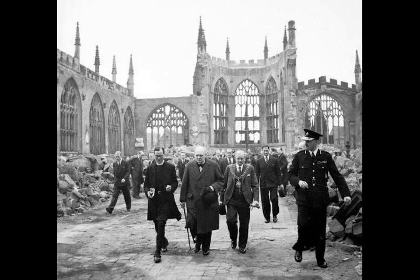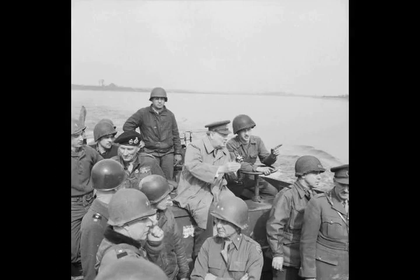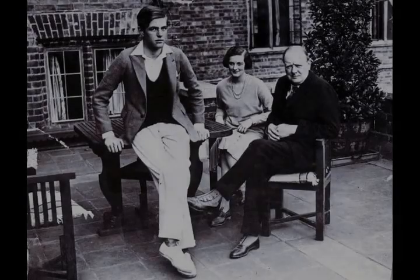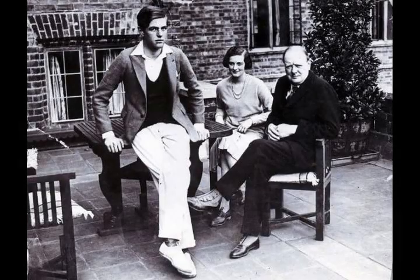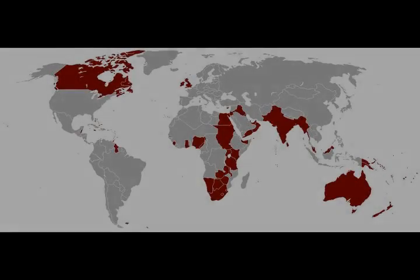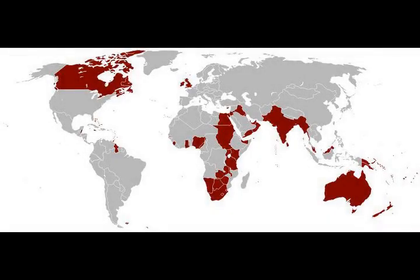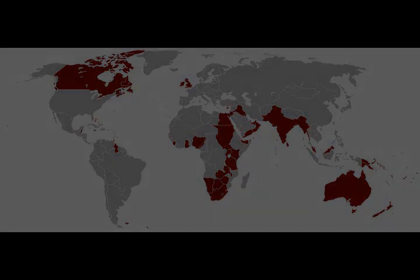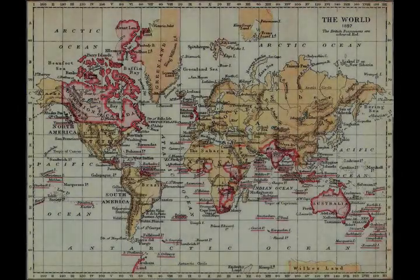Hitler launched his invasion of the Soviet Union on Sunday 22 June 1941. It was no surprise to Churchill who had known since early April, from Enigma decrypts at Bletchley Park, that the attack was imminent. He had tried to warn General Secretary Joseph Stalin via the British ambassador to Moscow, Stafford Cripps, but to no avail as Stalin did not trust Churchill. The night before the attack, Churchill alluded to his hitherto anti-communist views by saying, if Hitler invaded hell, I would at least make a favourable reference to the devil.